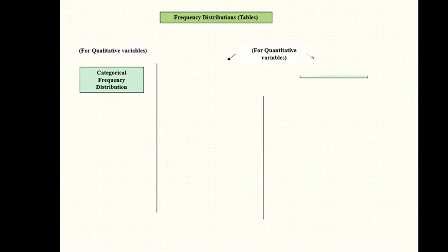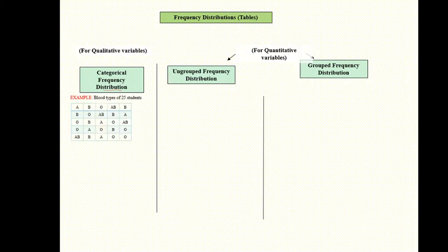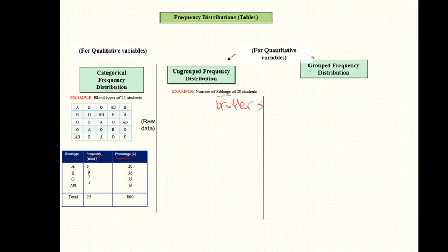For qualitative variables, we use categorical frequency distribution. For quantitative variables, we have ungrouped and grouped frequency distribution. Here's a quick example: we look at the blood types of 25 students — that's the raw data. We make frequencies and find the percentages. For ungrouped frequency distribution, the number of siblings — siblings means brothers or sisters.